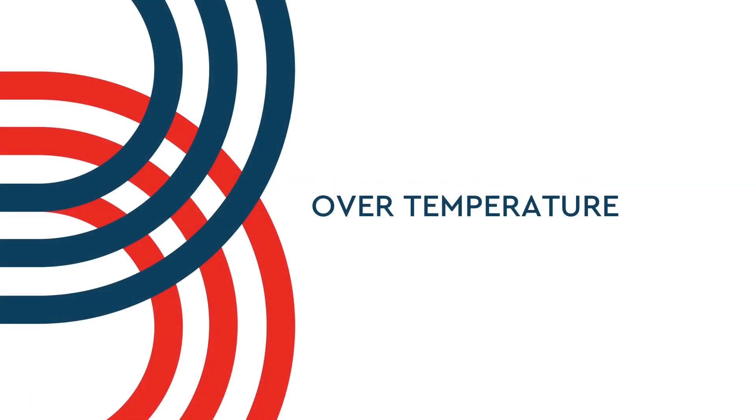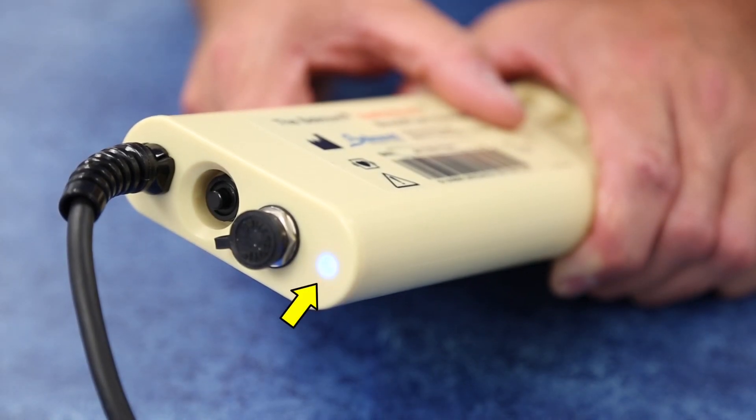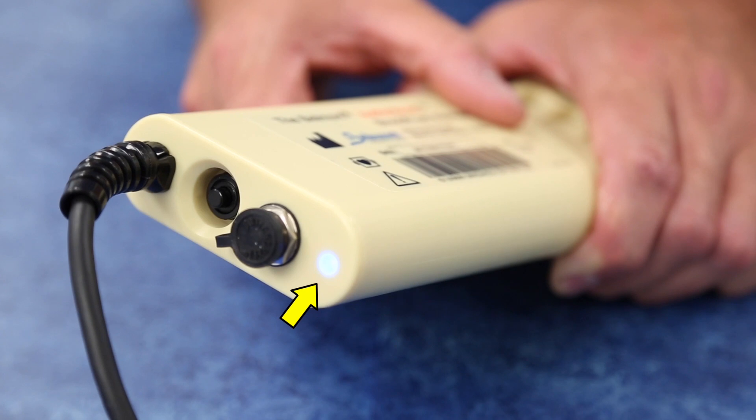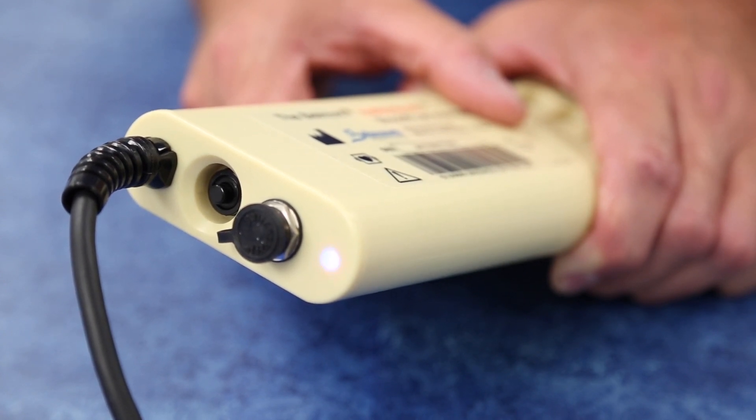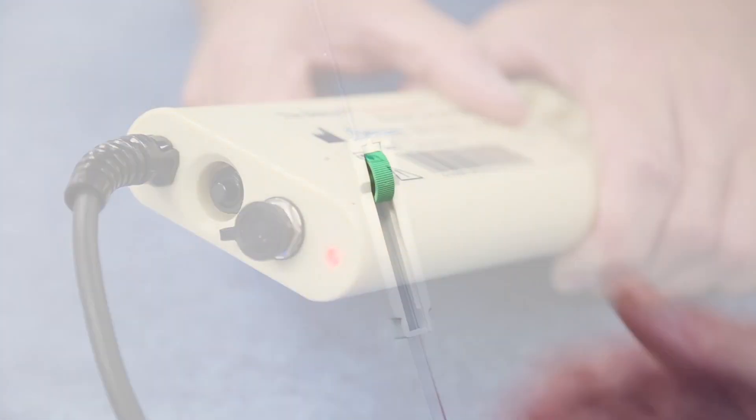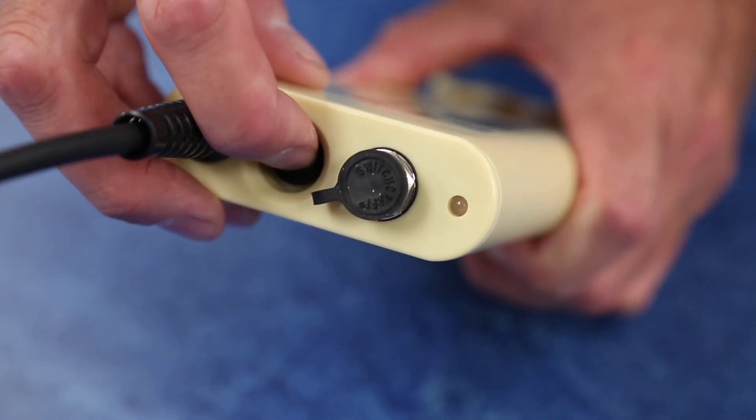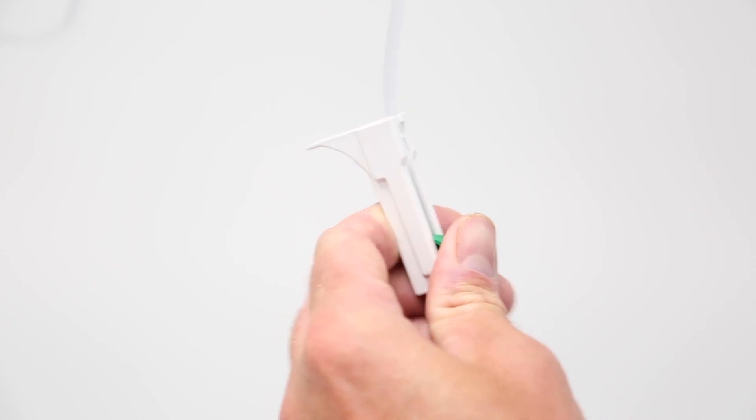If the system detects an over temperature, the system will stop heating, blue and red LEDs will flash, and an audible alarm will trigger. An over temperature alarm may be triggered by repeatedly stopping and restarting infusion during high flow conditions. To resolve the condition, clamp off the line and repower the system by turning the unit off and then back on. Unclamp the line to restore flow.